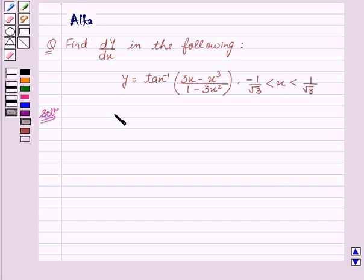Let's start with the solution: y equal to tan inverse 3x minus x cube upon 1 minus 3x squared.